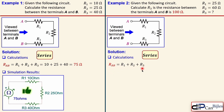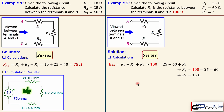The solution uses the same series combination formula. We know R_ab and the first two resistors, but R3 is unknown. Substituting the known values, we can calculate R3 straightforwardly — it will be 15 ohms. So 15 ohms is needed here to give 100 ohms between terminals A and B.